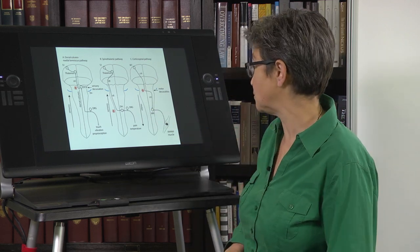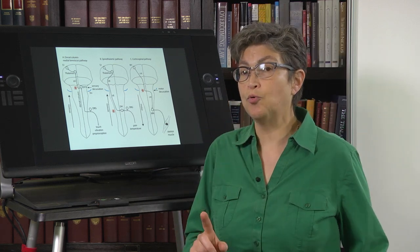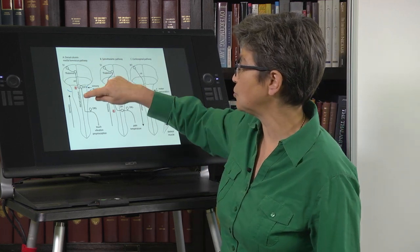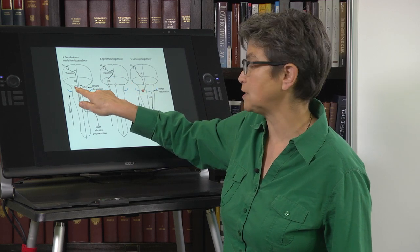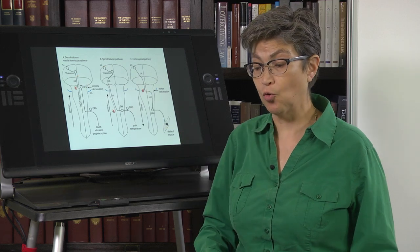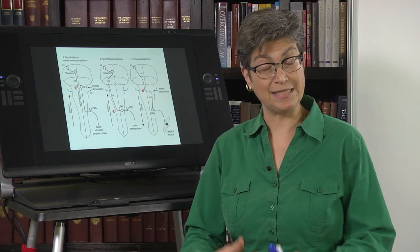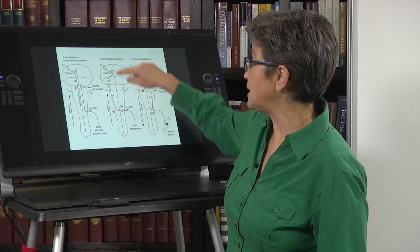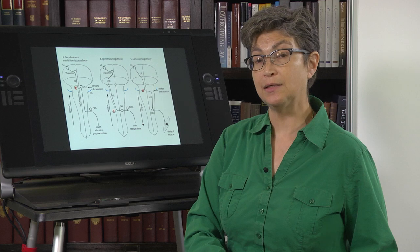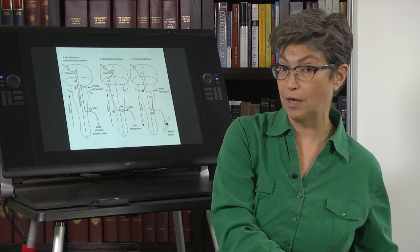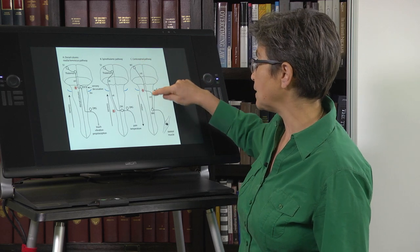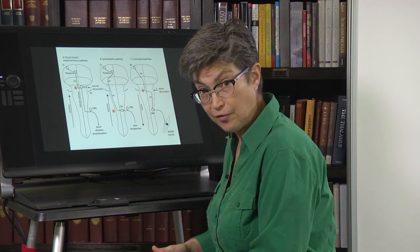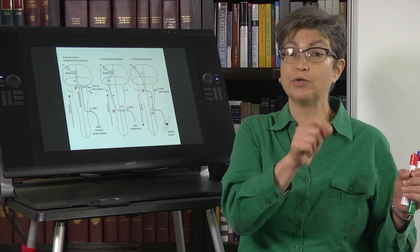One of the important points is where each pathway crosses. For the dorsal column medial lemniscus pathway, crossing occurs in the caudal medulla, so within the spinal cord, information about light touch, vibration, and proprioception is on the same side as the body part it refers to. For pain and temperature, the spinothalamic pathway crosses immediately and is then carried on the contralateral side. For the corticospinal pathway, information within the spinal cord is on the same side as the muscles it will innervate, but the opposite side from the motor cortex from which it arose.